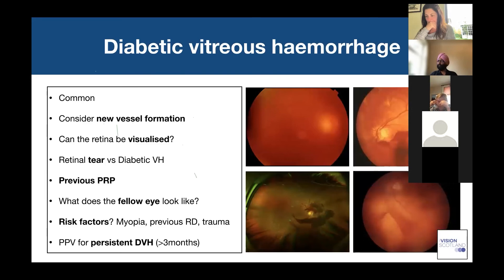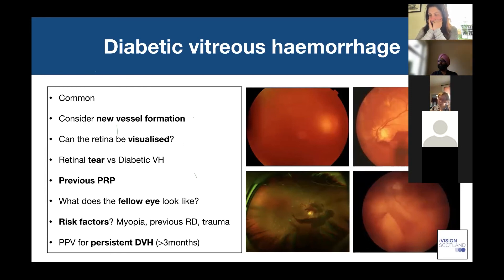A common presentation: a patient with type 2 diabetes suddenly wakes up with complete loss of vision — most commonly due to a diabetic vitreous hemorrhage. These are very common. If you diagnose a diabetic vitreous hemorrhage, think about why it happened — most commonly it's because early neovascularization is developing. These fragile new vessels have ruptured causing bleeding. Look at the fellow eye — does it have pre-proliferative changes? This gives you a clue about what's happened in the eye with the acute vitreous hemorrhage.